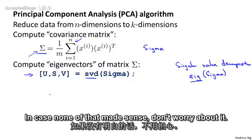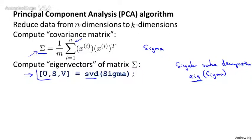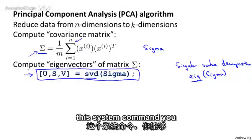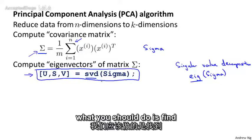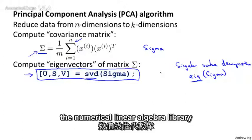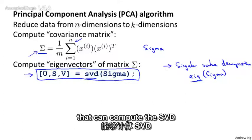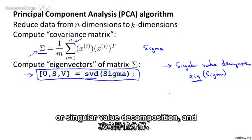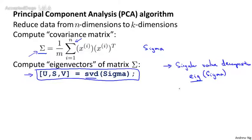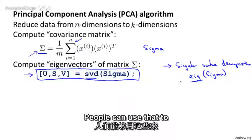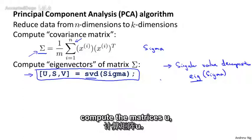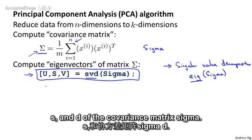All you need to know is that this is the command you should implement in Octave. If you're implementing this in a different language than Octave or MATLAB, find the numerical linear algebra library that can compute the SVD — singular value decomposition. There are many such libraries for probably all major programming languages, and you should be able to use them to find a routine to compute the matrices U, S, and V given the covariance matrix sigma.